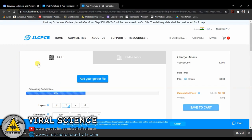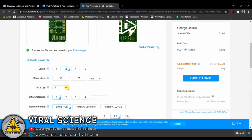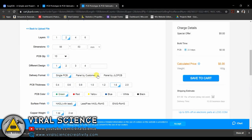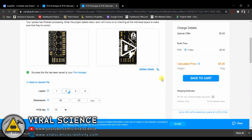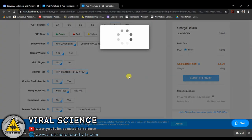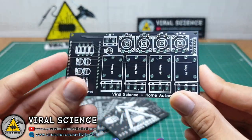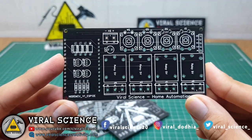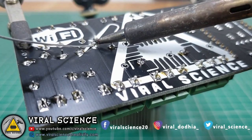After uploading, you can select the quantity, the color and place your order. Now after receiving your gold quality PCBs, you can assemble the components and solder all of them.